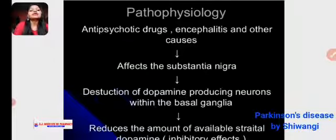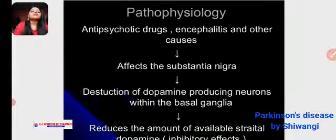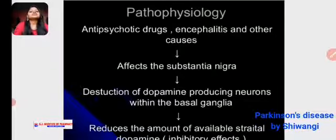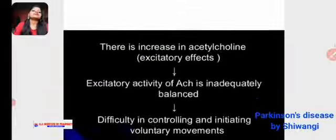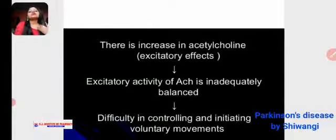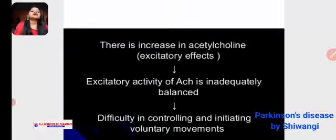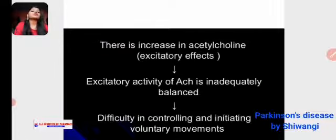These causes affect the substantia nigra, leading to dysfunction and destruction of dopamine-producing neurons within the basal ganglia. This stops or reduces the amount of available dopamine. Reduced dopamine reduces the inhibitory effect, and there is increased acetylcholine, which increases the excitatory activity of ACh — this is inadequately balanced, causing difficulty in controlling and initiating voluntary movement.